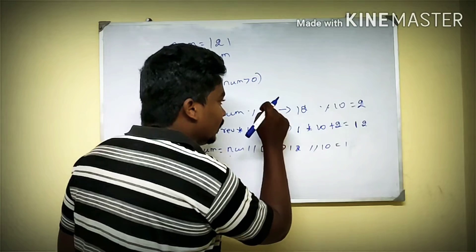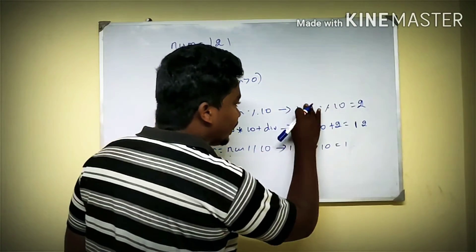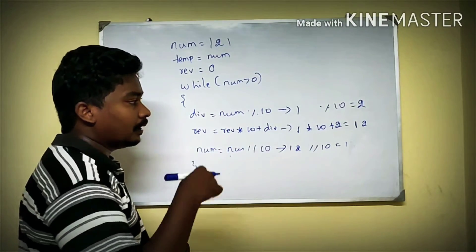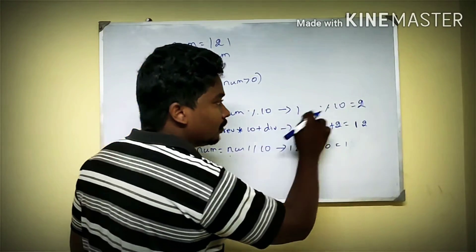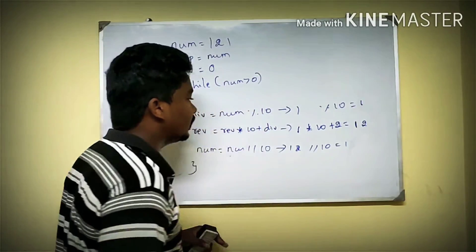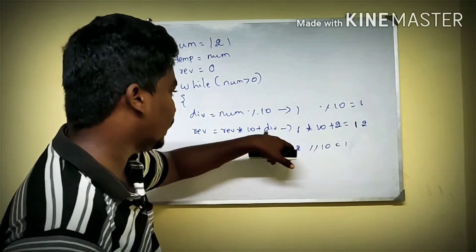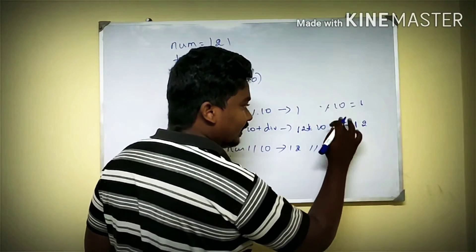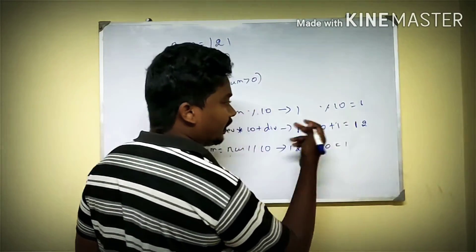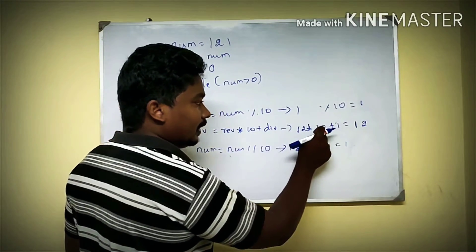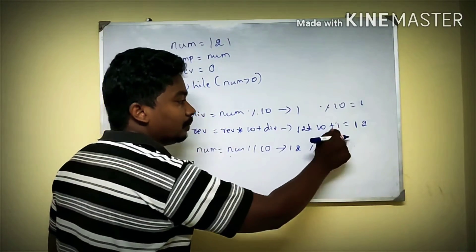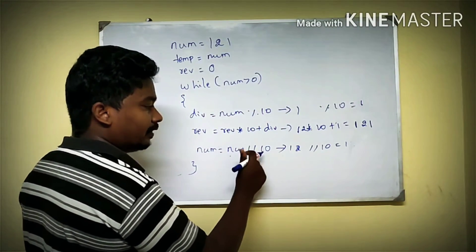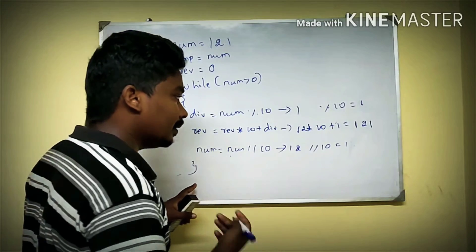Our value is 1. We divide by 10 again. Then the reverse value is updated: 12 into 10 plus 1. So 12 into 10 is 120, and 120 plus 1 is 121.